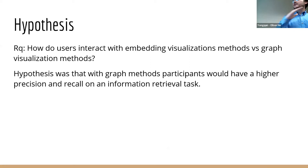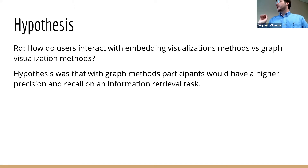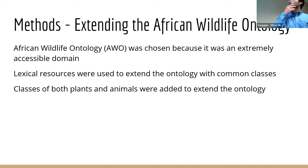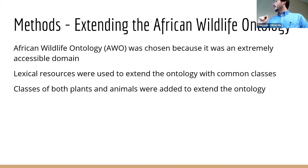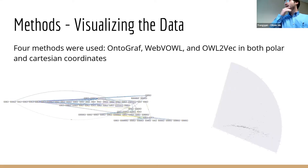I did a very simple user interaction test looking at how people interact with and read embedding visualizations versus graph visualizations of an ontology. The hypothesis was that graph participants would have higher precision and recall on an information retrieval task. In order to construct something the average user could work with, I had to choose an incredibly simple domain — I used a tutorial ontology, the African wildlife ontology, because everyone over the age of four knows about African animals. I extended the ontology with some lexical resources online of animals and flora and fauna from Africa.